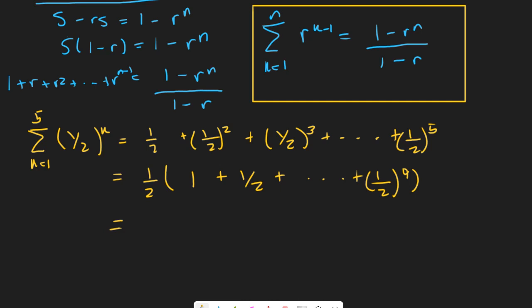So we have (1/2) multiplied by the series sum from k equals 1 to 5 of (1/2) to the k minus 1. The upper index is 5, and the common ratio is raised to k minus 1, so the last term is to the 4th power because 5 minus 1 is 4. Different people define it differently — some start at k equals 0 and bump the upper index down. Really it's all just bookkeeping.